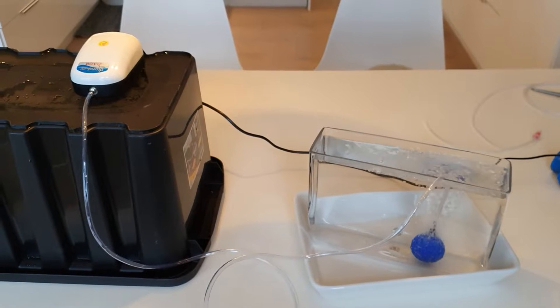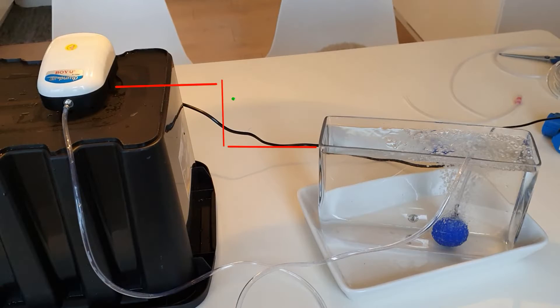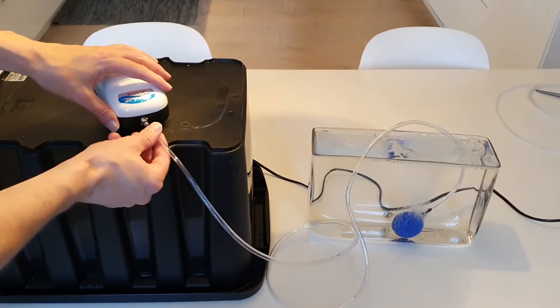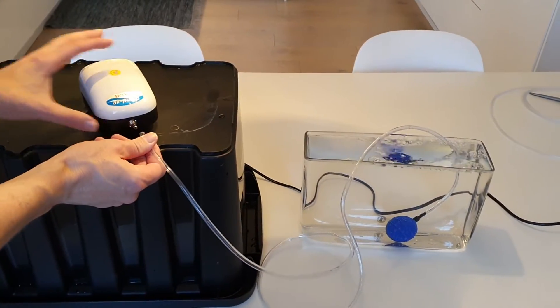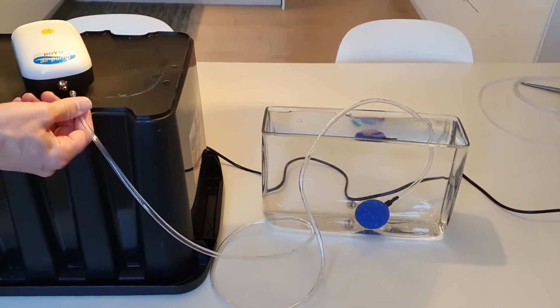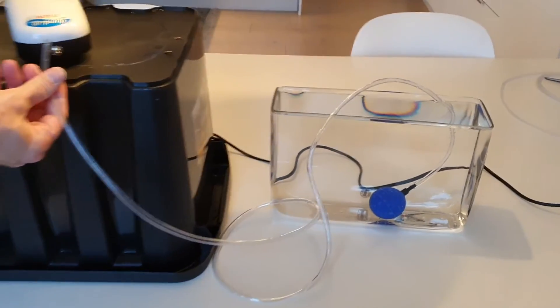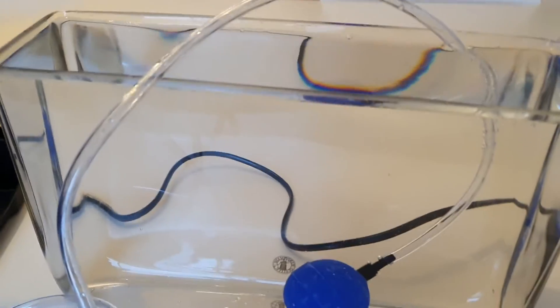We started out with the recommended setup if you are not using valves, placing the pump higher than the water level. We simulate power outage by disconnecting the airline. Not surprisingly everything is okay, there is no returning water.